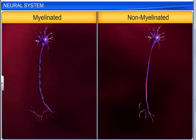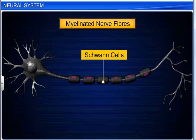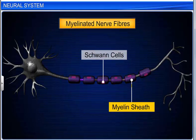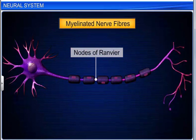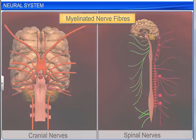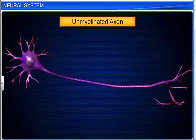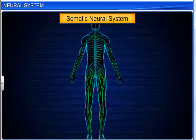Axons are of two types: myelinated and non-myelinated. Myelinated nerve fibers are enclosed by Schwann cells, which form a myelin sheath around the axon. The gaps between two adjacent myelin sheaths are called the nodes of Ranvier. These fibers are found in cranial and spinal nerves. Unmyelinated nerve fibers are enclosed by a Schwann cell that does not form a myelin sheath around the axon, and nodes of Ranvier are absent. These fibers are found in the autonomic and somatic neural systems.